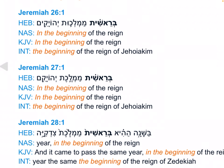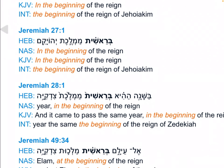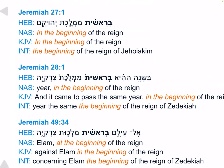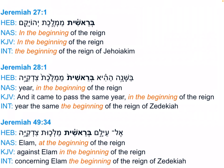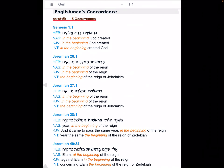In the beginning of the reign of Jehoiakim — Jeremiah 27:1, in the beginning of the reign of Jehoiakim. Jeremiah 28:1, in the same year, the beginning of the reign of Zedekiah. Same with Jeremiah 49, in the beginning of the reign of Zedekiah.